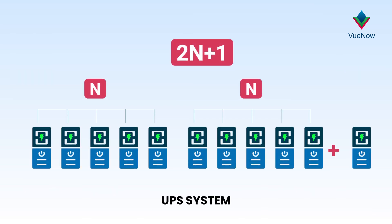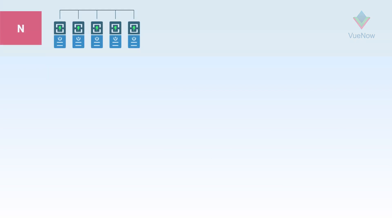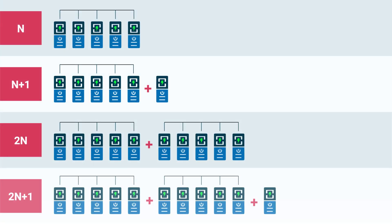2N plus 1: the 2N+1 model takes the 2N model a step further and is the highest obtainable redundancy level. It provides a full set of backup units plus an additional component for extra protection. This configuration can maintain operation in the event of multiple unit failures and withstand an entire primary system shutdown, sustaining N+1 redundancy if a center's main unit loses power or undergoes maintenance.